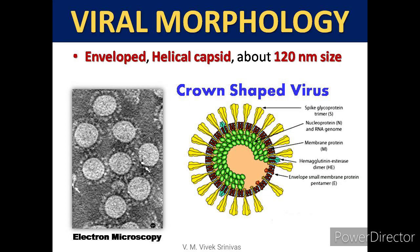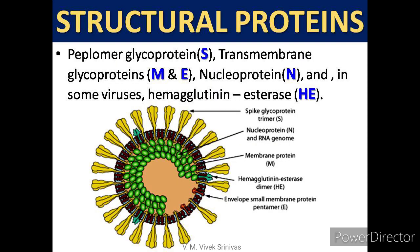Virus morphology: The virus is enveloped, possesses a helical capsid, and is about 120 nm in size, which resembles a crown-shaped virus. The viral genome encodes five structural proteins: peplomer glycoprotein, transmembrane glycoproteins M and E, nucleoprotein, and hemagglutinin-esterase.